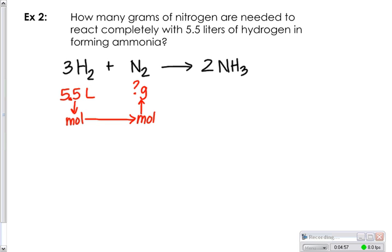When you write the conversion out, you have 5.5 liters of H2, and we want to convert that to moles of H2. We have to put liters on the bottom to cancel that out. We know that for every one mole of hydrogen, there are 22.4 liters of hydrogen gas.